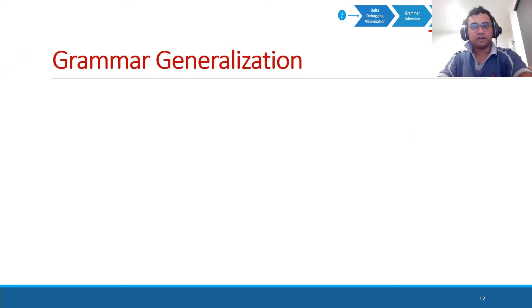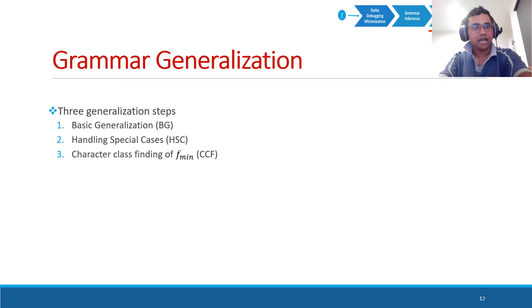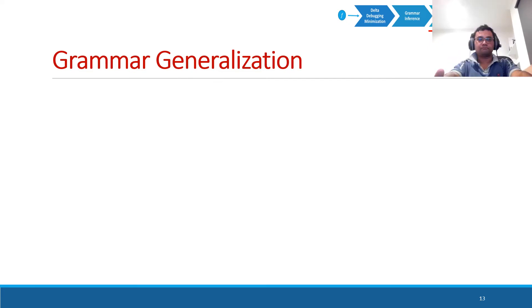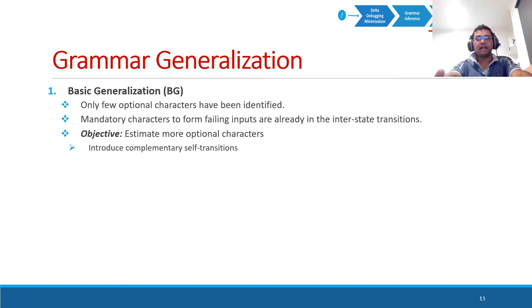Next step is grammar generalization. There are three generalization steps: basic generalization, handling special cases, and character class finding of the minimal failing input. Basic generalization: we have already identified few optional characters in the grammar. And the mandatory characters are in the interstate transitions. In this step, we estimate more optional characters using the concept of complementary self-transitions.